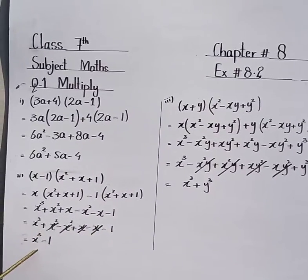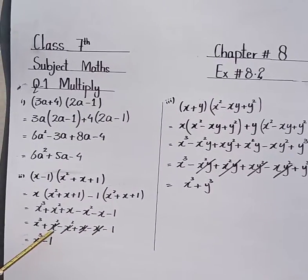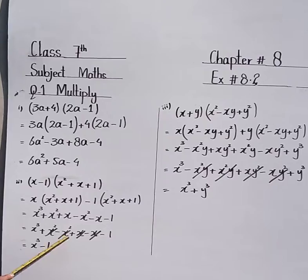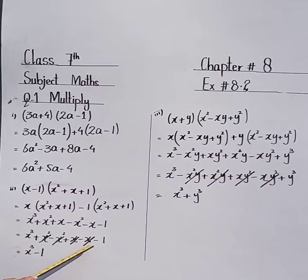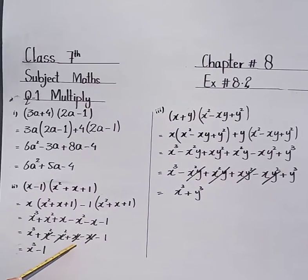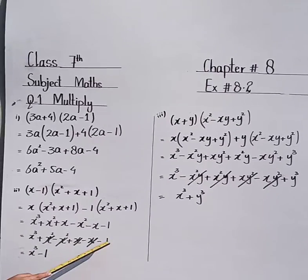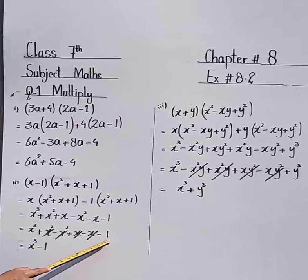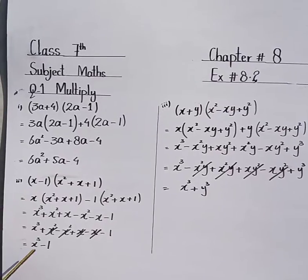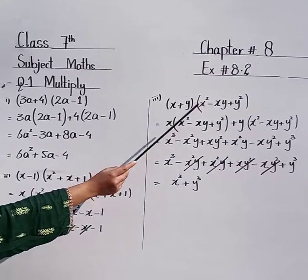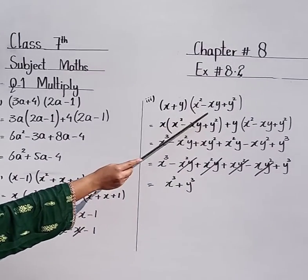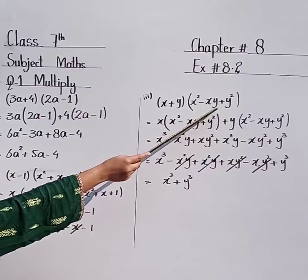Now x cubed will remain the same. Plus x squared minus x squared — both are cancelled. Plus x minus x — these are also cancelled. From here minus 1 is left. So the answer is x cubed minus 1.